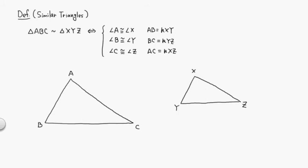K is some positive constant. So you can see that here A is congruent to X, angle B is congruent to angle Y, and angle C is congruent to angle Z.